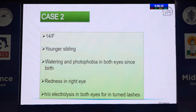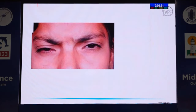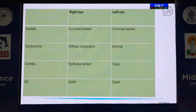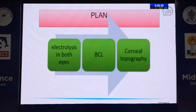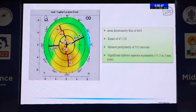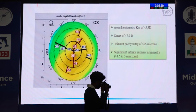The patient's younger sibling, a 14-year-old female, also visited with the same complaints and a history of electrolysis in both eyes for inturned lashes. In both eyes, the eyelashes were turned inside with conjunctival congestion and an epithelial defect in the right eye, while the anterior chamber was quiet. Her corneal topography also showed signs of keratoconus in both eyes.